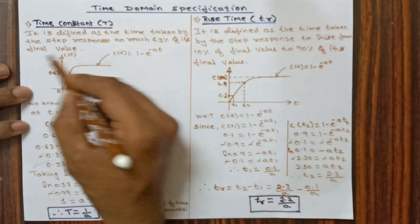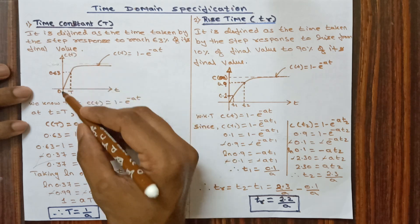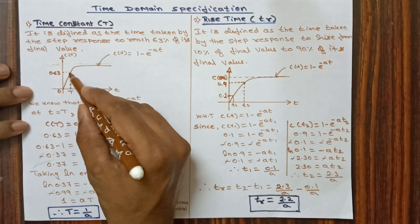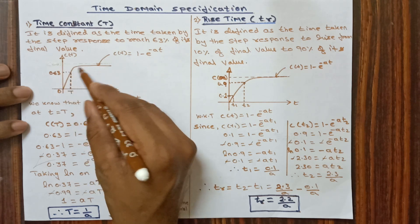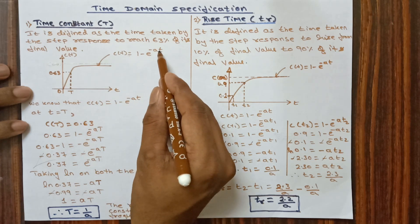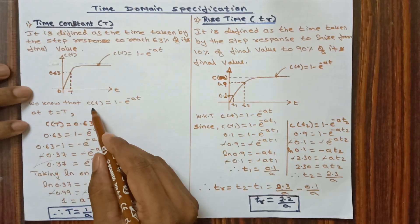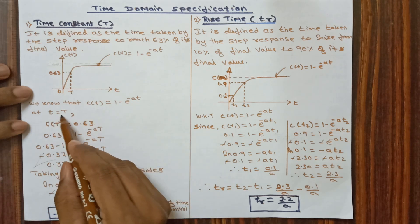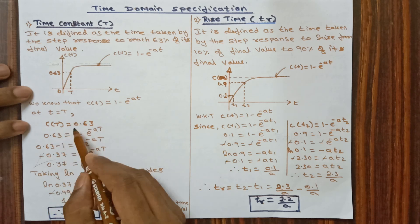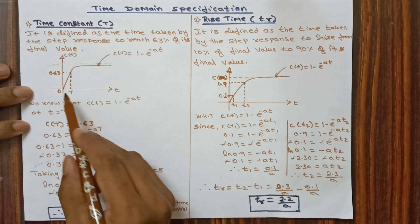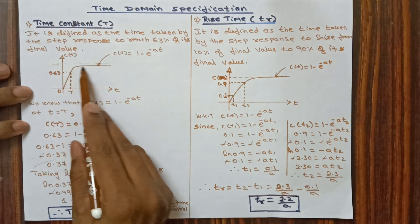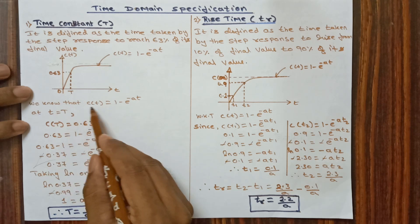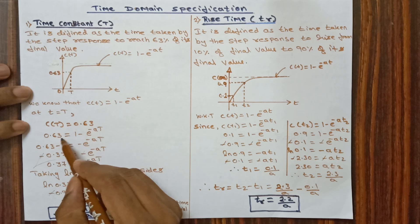Time constant is defined as the time taken by the step response to reach 63% of its final value. You can see here the time taken by the step response to reach 63% of its final value. The response C(t) is equivalent to 1 minus e power minus at. At t equal to capital T, C(T) is 63% of its final value, that is C(T) equals 0.63.